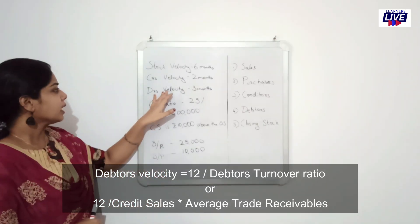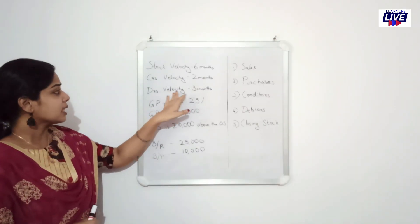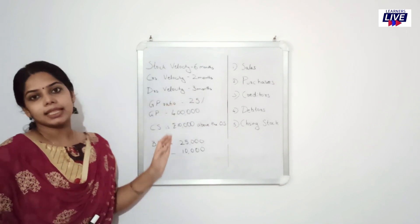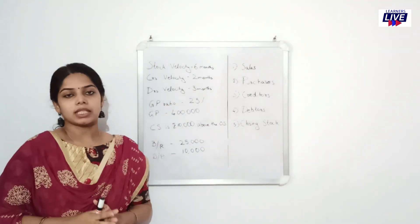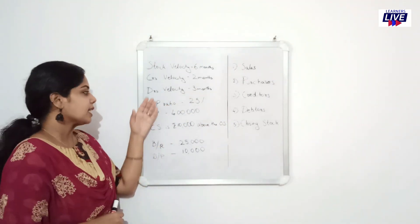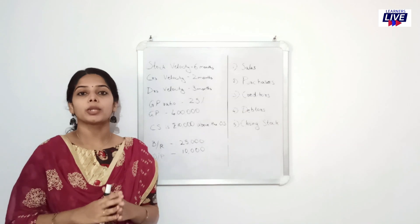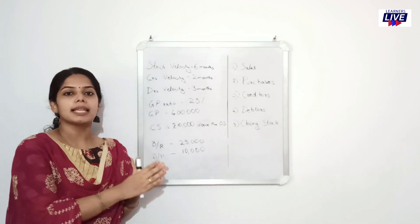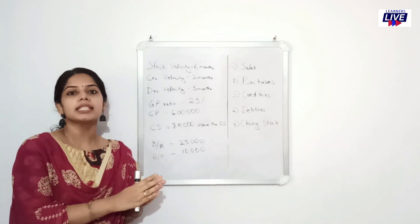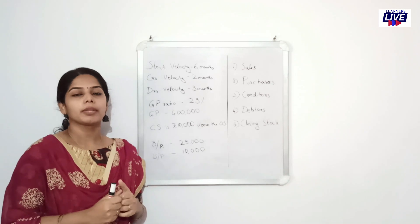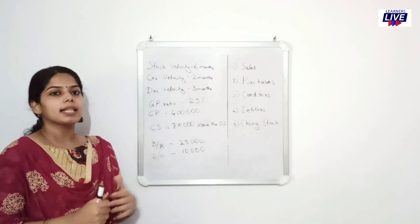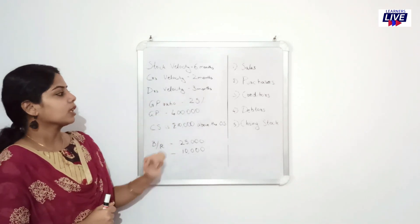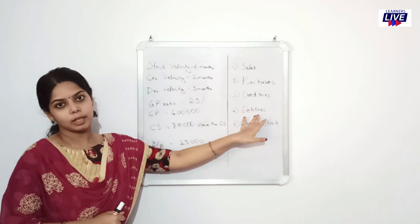Now we can see how debtors velocity is different. We have to ask sales. If we don't know cash sales, another way, we assume that this is the complete credit sales. Then we can make the sales velocity and make it simple to get debtors.